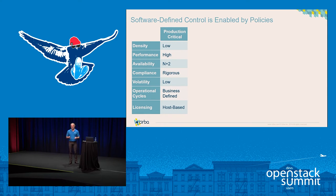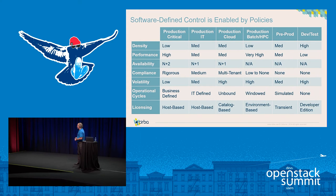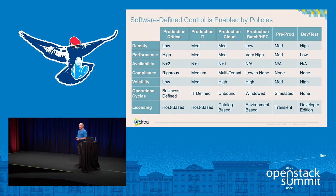Parameters also include volatility, operational cycles, and software licensing requirements. If this type of parameter was required in just one environment — say production critical — density has to be low, performance is high, you need N plus two availability at the node level, rigorous compliance about where workloads will run, business-defined operational cycles, and host-based licensing parameters. Tough enough in single environments, but when running multiple types of workloads — production IT, cloud, batch, or DevOps — you've got all these different parameters to control, very difficult with the operational tools available today, especially in maturing technologies like KVM.